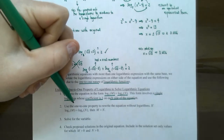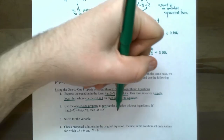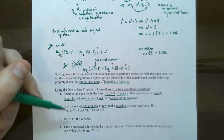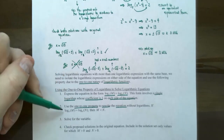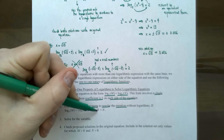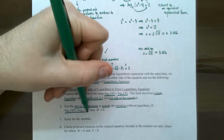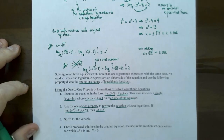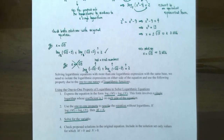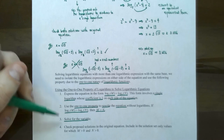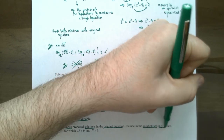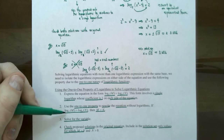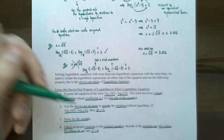Now use the one-to-one property to rewrite the equation without logarithms. If log base b of m equals log base b of n and these are equal to one another, then the arguments must be equal: so m equals n. Once you have the logarithms removed, then solve for the variable. And again, because you start with a logarithmic equation, you must check your solutions with the original equation — including only solutions where the argument of one logarithm is positive and the argument of the other logarithm is also positive.